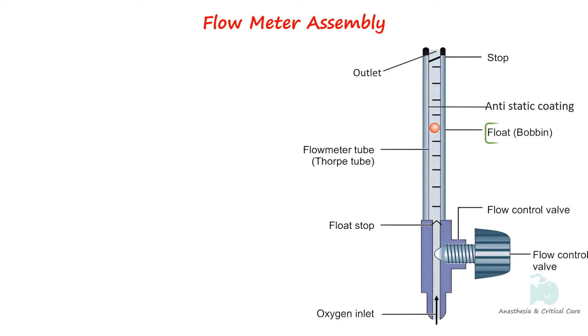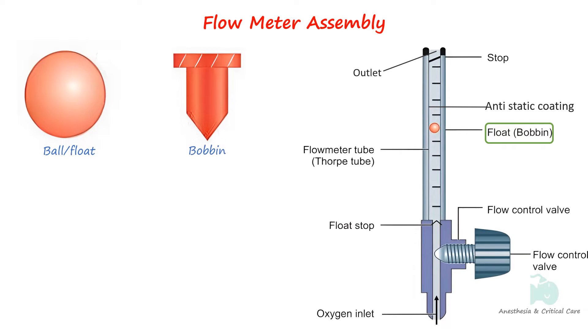The indicator, made of aluminum, is either a float or bobbin type. Depending on the shape and design, the bobbin type can be either rotating or non-rotating.